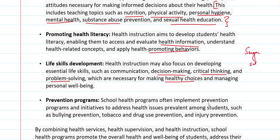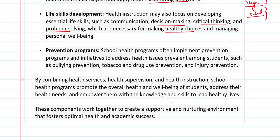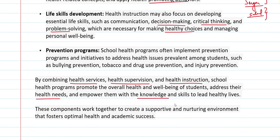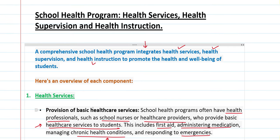Health instruction also focuses on building skills like decision making, critical thinking, and problem solving, which are necessary for making healthy choices. For example, if someone offers you sugar or salad, your health knowledge along with your decision-making skills will help you analyze and choose correctly. School health programs also address prevention programs and initiatives — informing students beforehand about risks such as drug addiction or injuries, and what to do to avoid them. When we combine health services, health supervision, and health instruction, the school health program promotes overall health and well-being in children, addresses their health needs, empowers their knowledge, and these components working together lead to a healthy life.